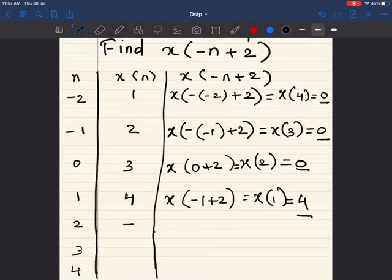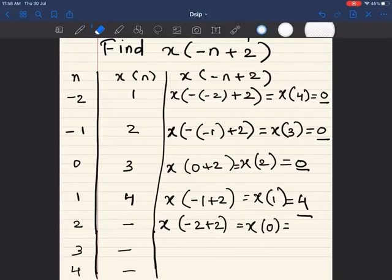So I do not know the value of x(2), x(3), and x(4). Now I am going to substitute this over here: -2+2, which is nothing but x(0), which is 3.